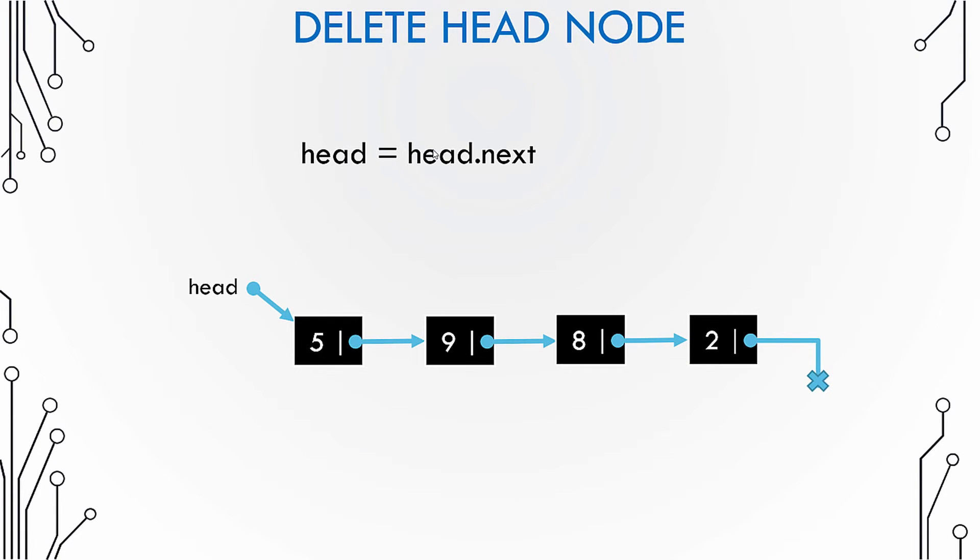Now what if you have to delete the head node? How would you do it? Head node is the first node. Well, it's quite simple. You just move the head pointer to point to the next node. So this statement will do the same thing. If you write head equals to head dot next, it means that head will shift to pointing to the next element.